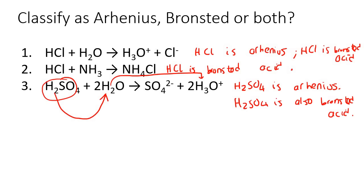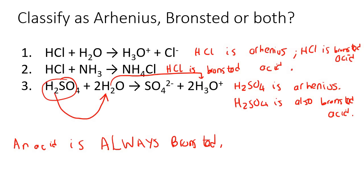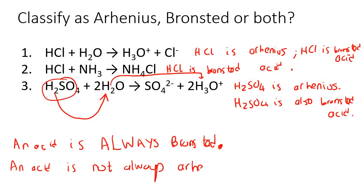Can you see something here? An acid is always Bronsted, because it is always giving away protons. But if it's not happening in water, then it can't be Arrhenius. So an acid is not always Arrhenius. That is why Arrhenius came up with the definition first, and then Bronsted said you can't only limit it to water — we need to include everything. Bronsted comes up with a definition we can use for all acids.